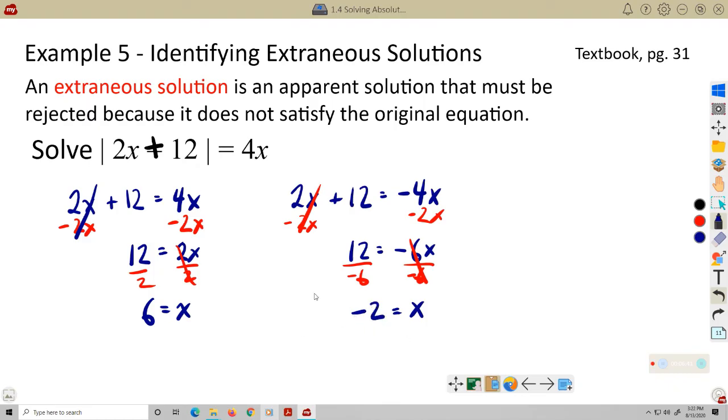But look, if I plug this one, if I substitute negative 2 for X in the original equation, the absolute value equation, the right side becomes a negative 8. An absolute value cannot equal a negative number. So this one gets rejected, and this is my only solution. Make sure you double check, especially when you have one variable inside the absolute value and one variable not in the absolute value. Make sure you double check to make sure that both of your solutions work.